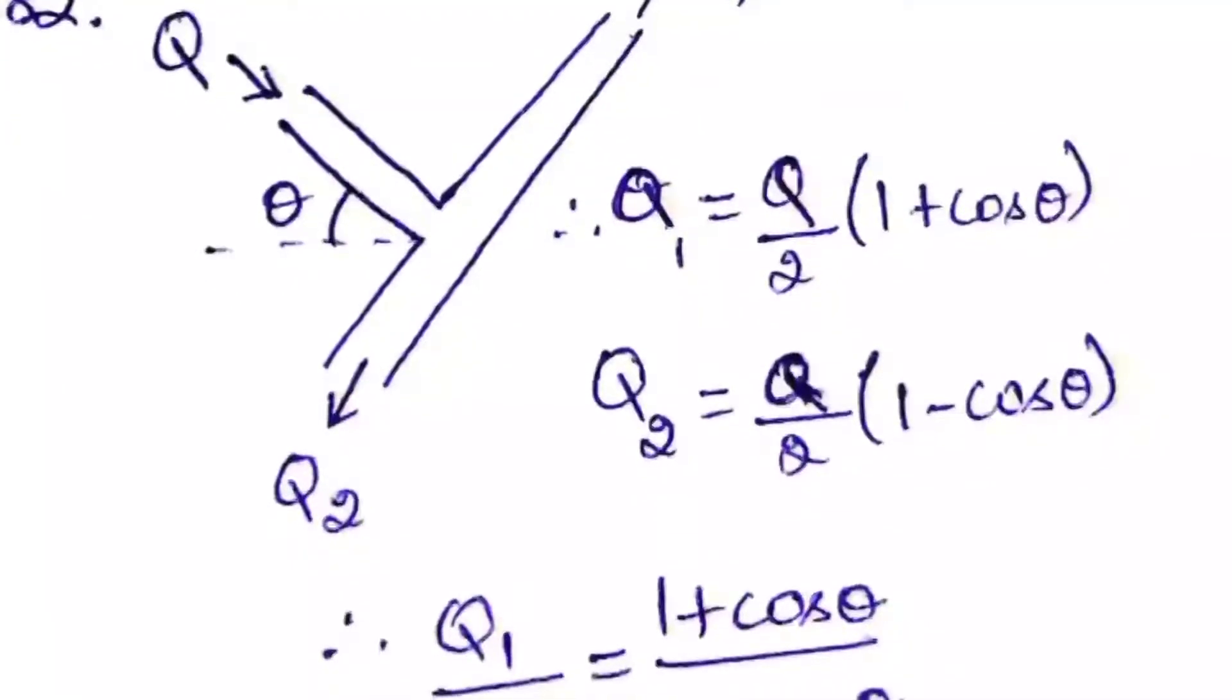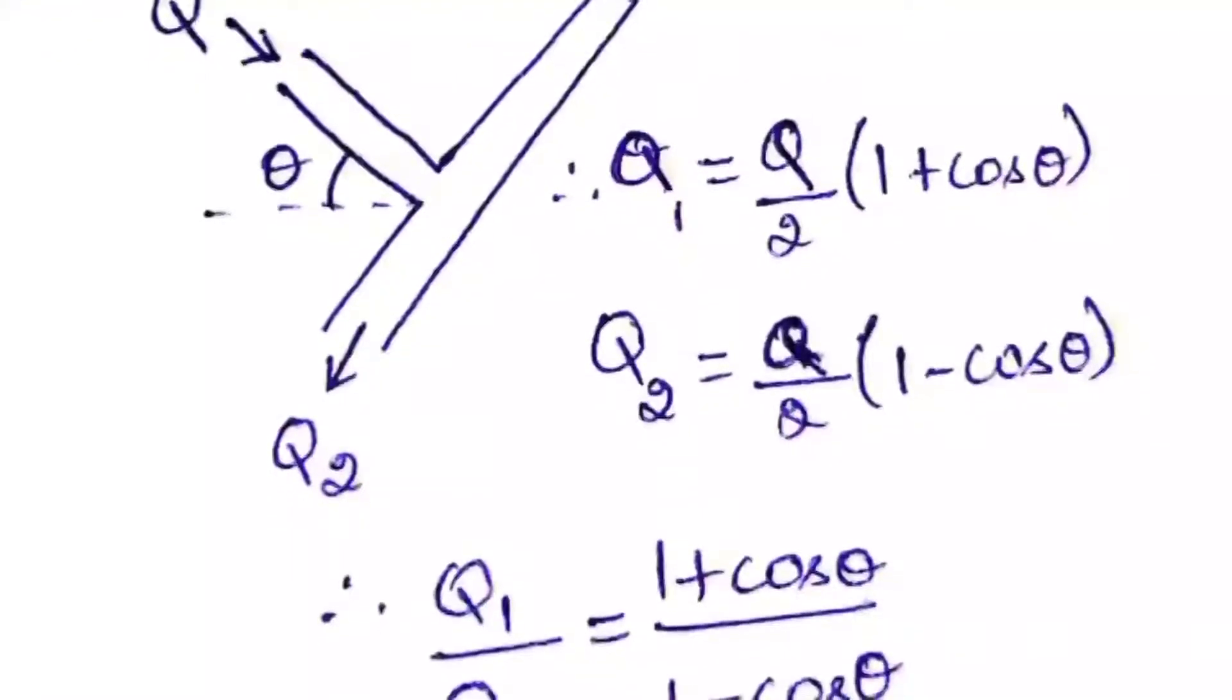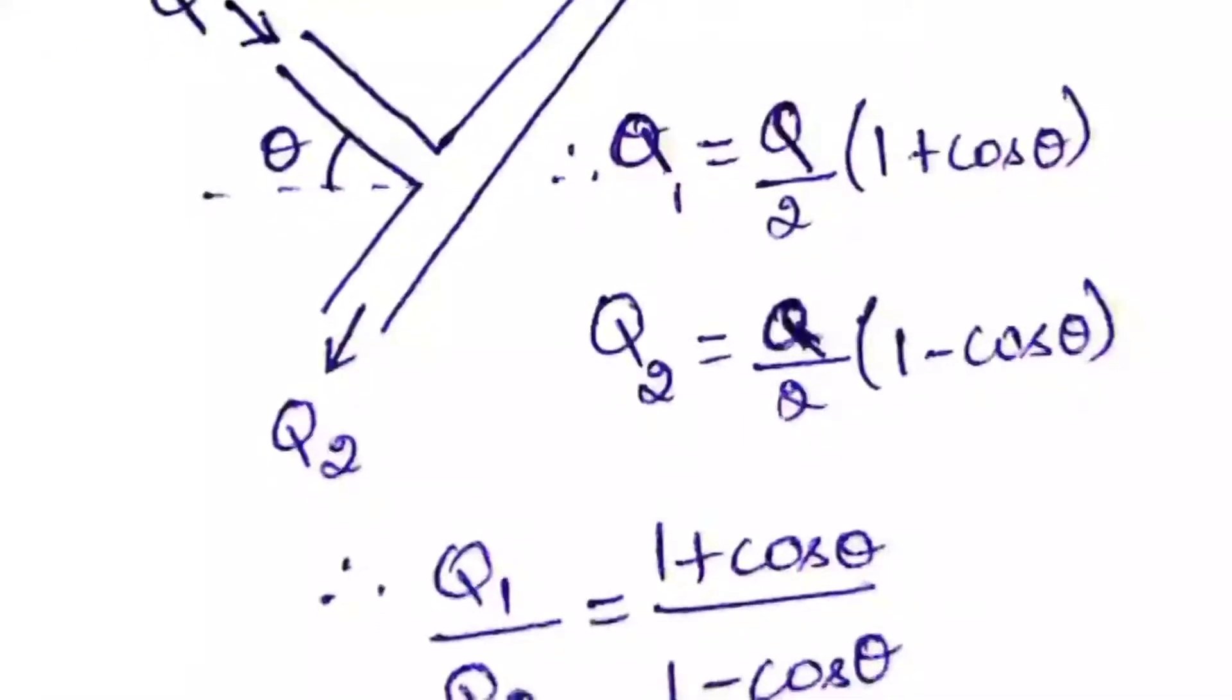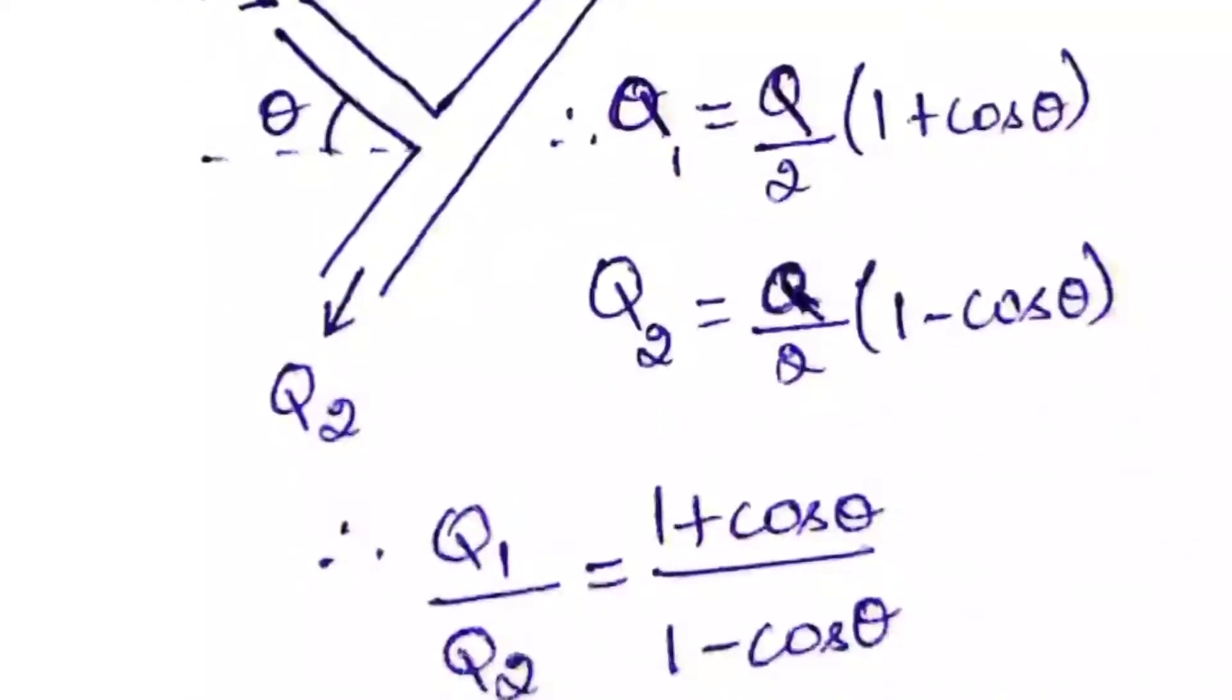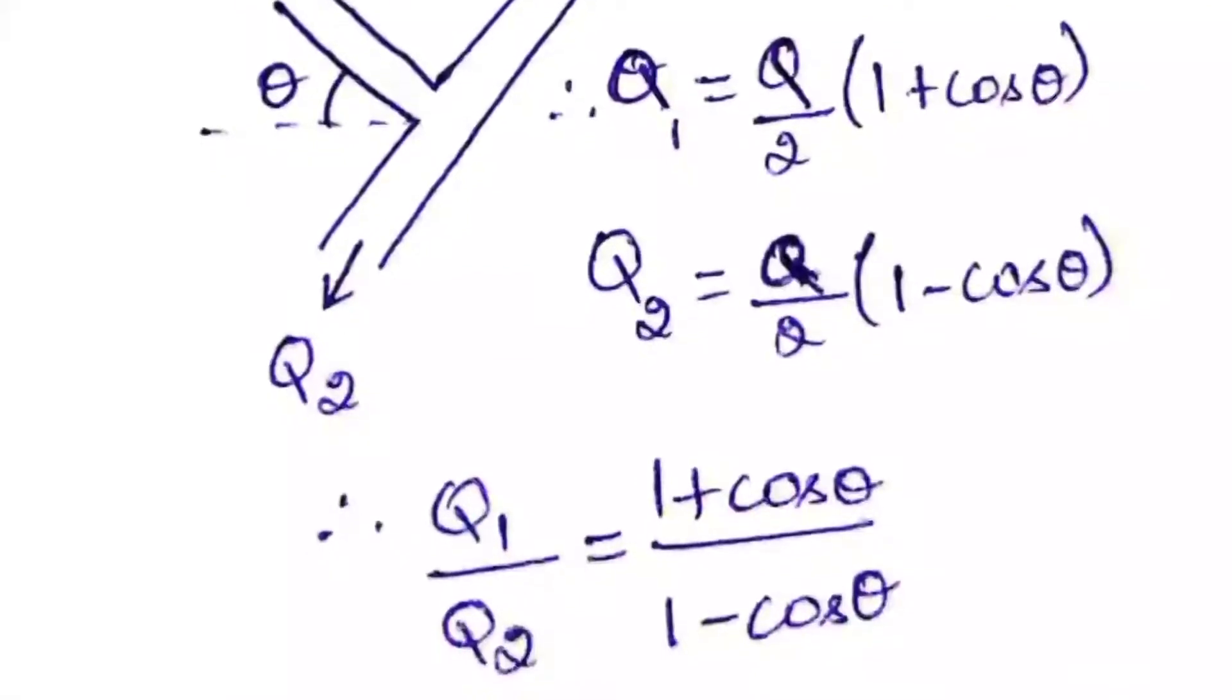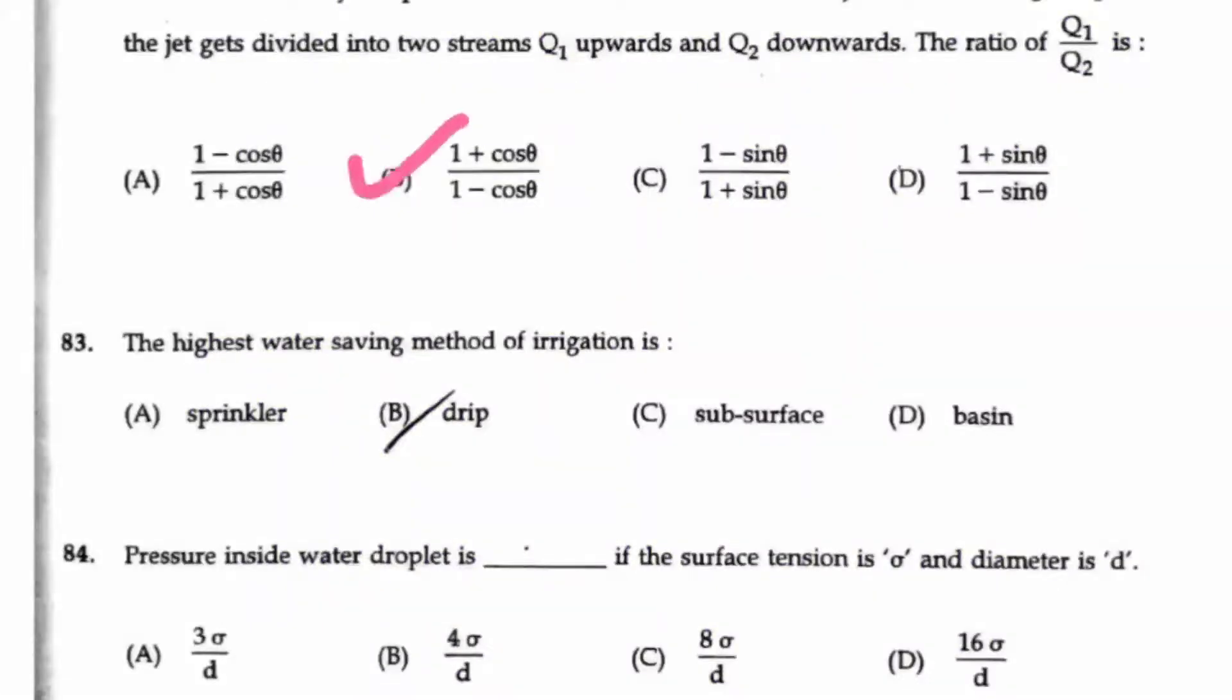So if you normally take the quantity, Q1 is Q by 2 into 1 plus cos theta, and for Q2 it is Q by 2 into 1 minus cos theta. So if you take the ratio, automatically Q by 2 will be cancelled. So you will get the answer is 1 plus cos theta by 1 minus cos theta. So here option B is the right answer.